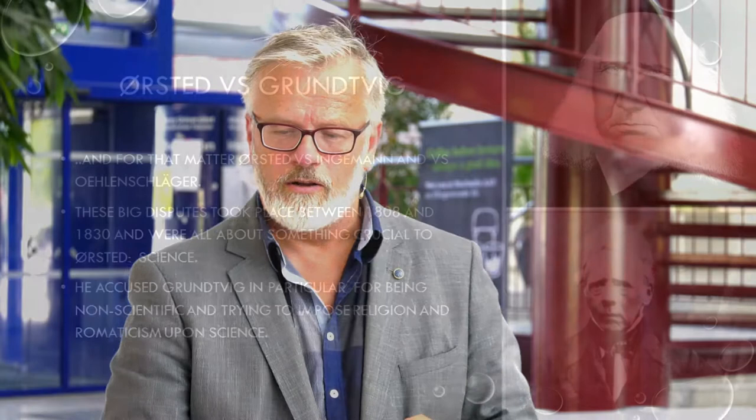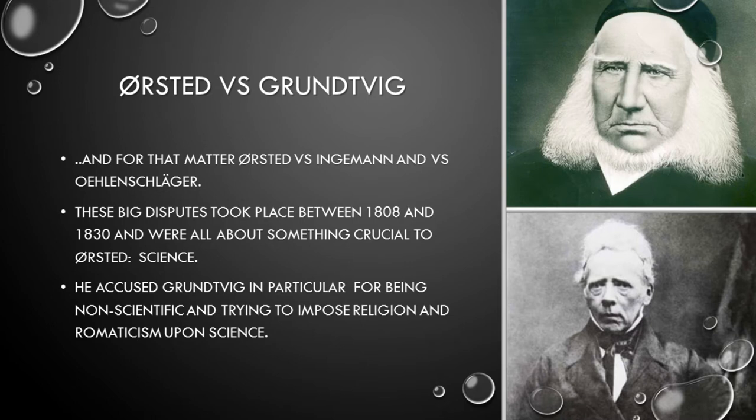And that is what brought him into a huge fight with Nikolai Felix Severin Grundtvig, whom you may recall from our previous lectures. Because Grundtvig had a quite different notion of all this. In Grundtvig's mind, there's always a bit of divinity behind everything — the big guy who makes all the decisions for us, and therefore his presence can be felt in everything. And Ørsted just couldn't have that. He couldn't accept that as being scientific in any shape or form. He had a big row with Grundtvig, and an increasingly bigger row with Ingermann and Öhlenschläger — two very influential figures from the Danish Golden Age in the 1820s. These disputes took place somewhere between 1808 and 1830, and he accused Grundtvig in particular of being non-scientific and trying to impose religion and Romanticism upon science.